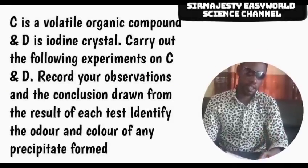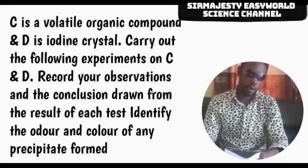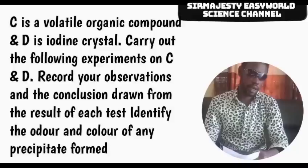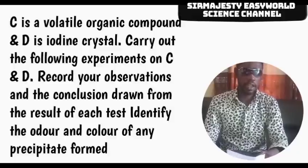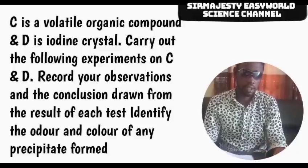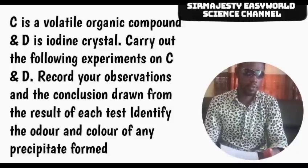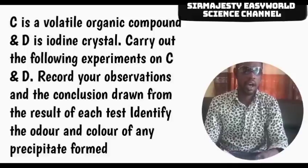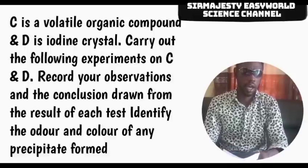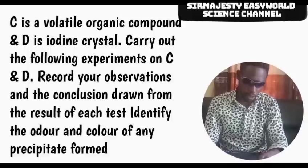Specimen C is a Volatile Organic Compound. Specimen D is an iodine crystal. Carry out the following exercises on C, record the observations and conclusions drawn from the result of each test, and identify the color and odor of any precipitate formed.